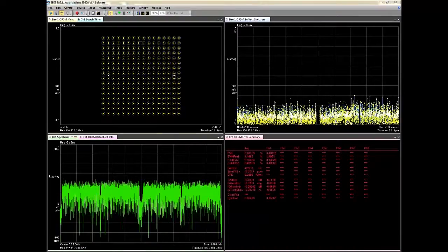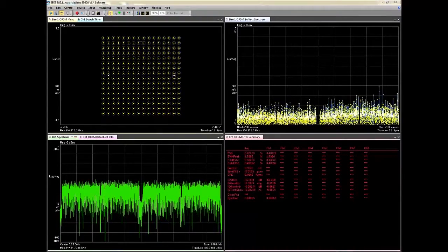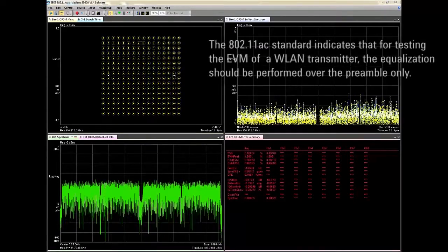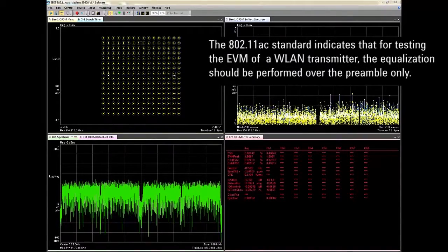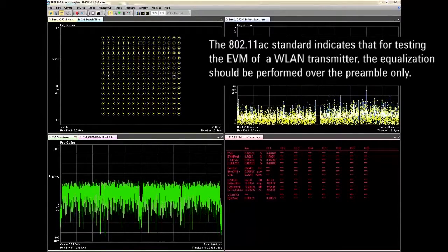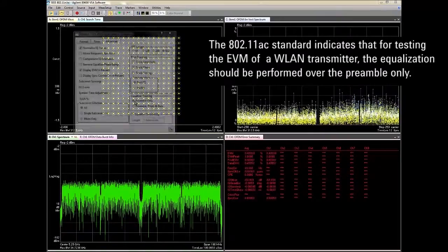It's important to understand your equalizer training analysis settings when making EVM measurements and comparing between test systems. The 802.11ac standard indicates that for testing the EVM of a wireless LAN transmitter the equalization should be performed over the preamble only.